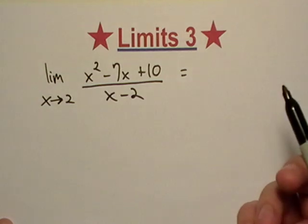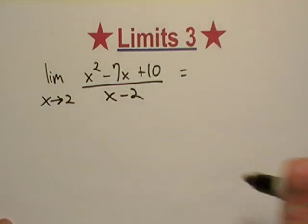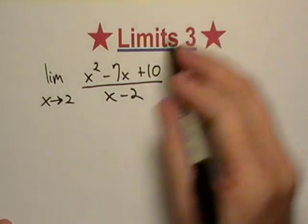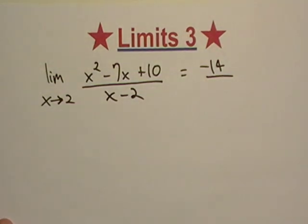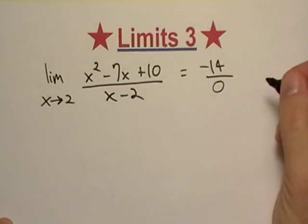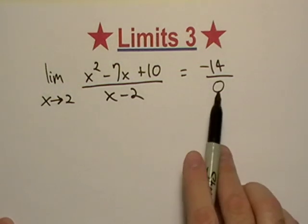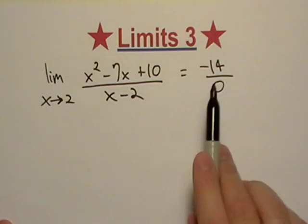If I found f of 2, like I just did the substitution method, I would get, let's see here, that would be negative 14, maybe, if I did my arithmetic right, which isn't always the case. Well, I'm dividing by 0, aren't I?